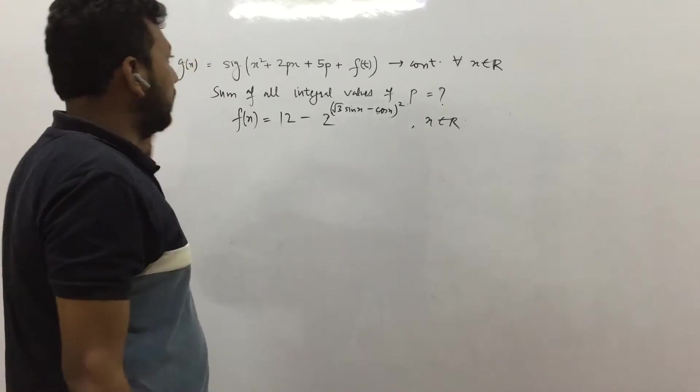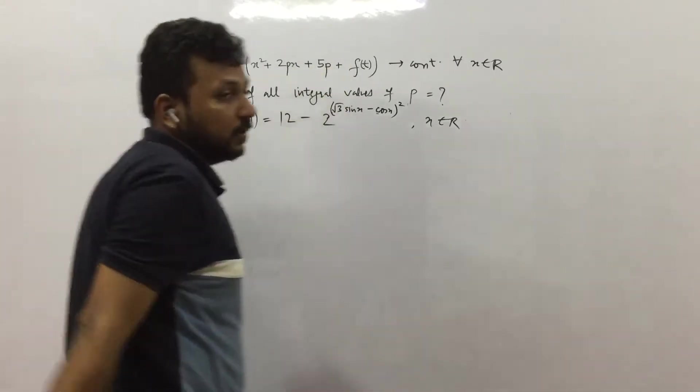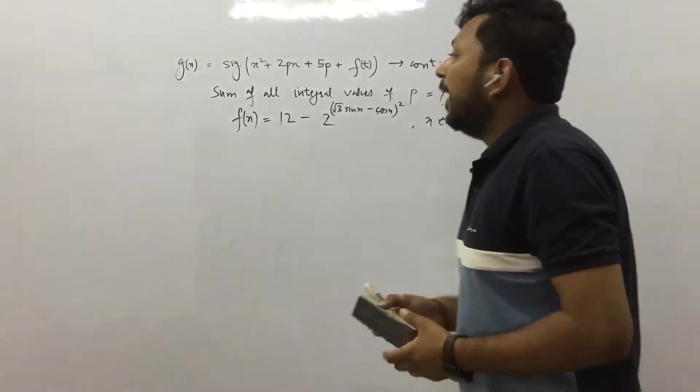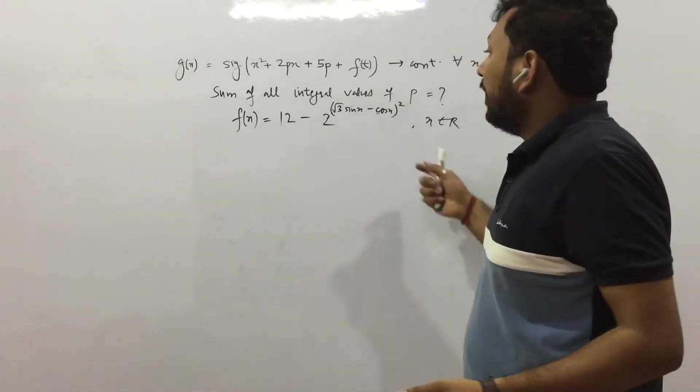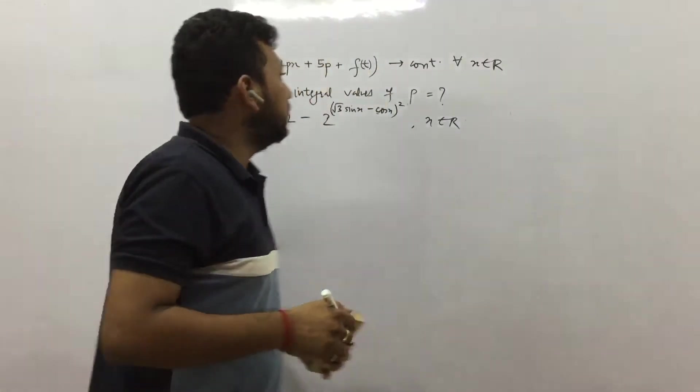So first of all let us see the question. See this is a polynomial function and this is a trigonometric function. So we need to find the correlation between them and there is no direct correlation. So what is the use of this function, why it is given this specific form? So let us first understand this.